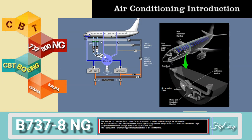The 800 aircraft have two recirculation fans that are used to enhance airflow through the mix manifold. Air from the forward cabin and from the electrical equipment bay is drawn through a shroud located over the forward cargo compartment, then flows through filters to the recirculation fans. The recirculation fans then supply the recirculated air to the mix manifold.